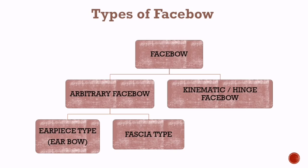There are two types of face bows: arbitrary face bows and kinematic or hinge face bows. The arbitrary face bow determines the approximate center of rotation of the condyle, while the kinematic face bow establishes the center accurately. The arbitrary face bow is further divided into earpiece type and fascia type.